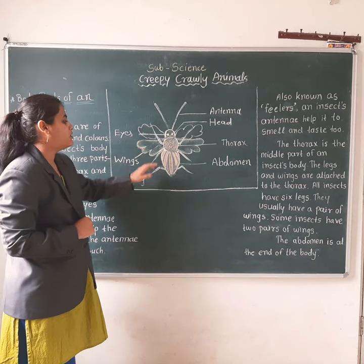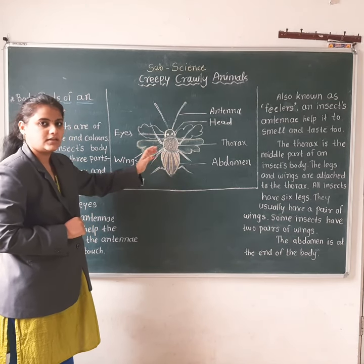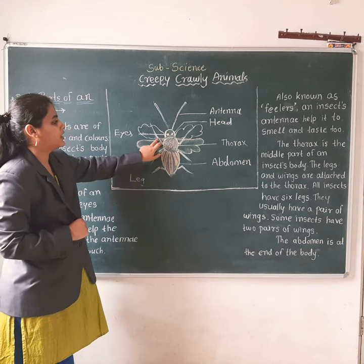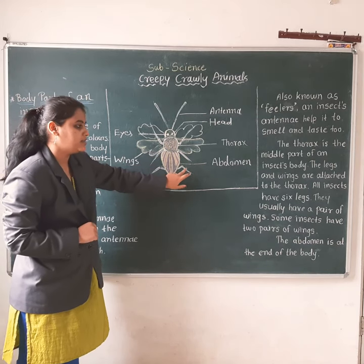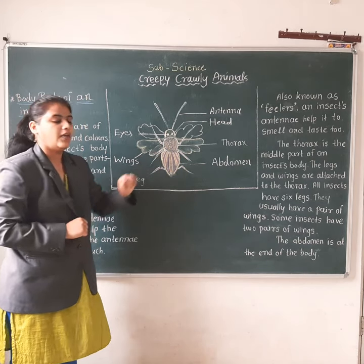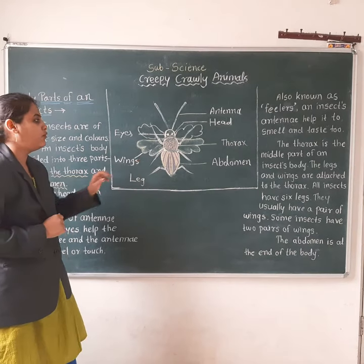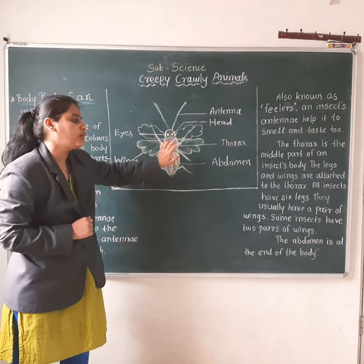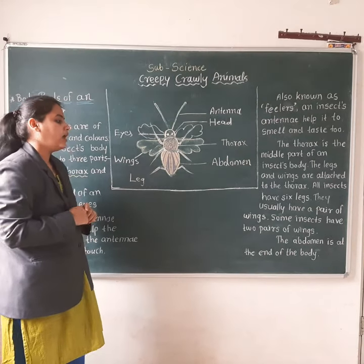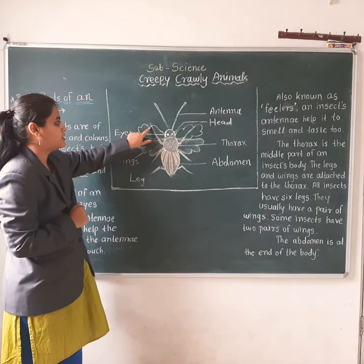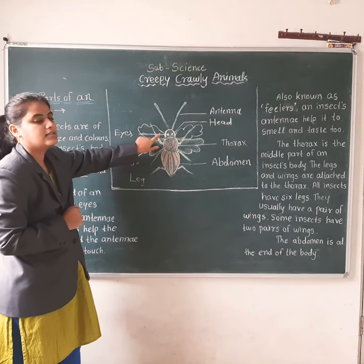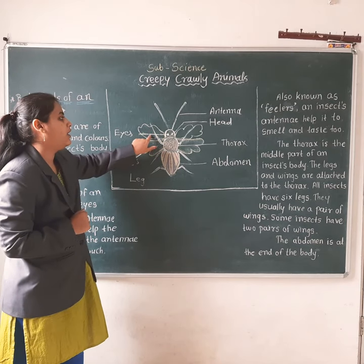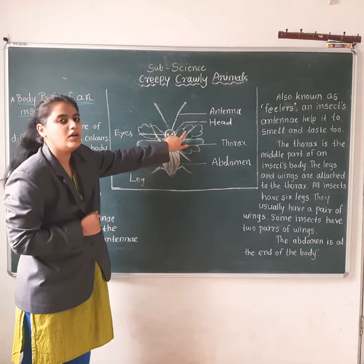All insects have six legs. See — these insects also have six legs: one, two, three, four, five, six. And they usually have a pair of wings. Some insects also have two pairs of wings.